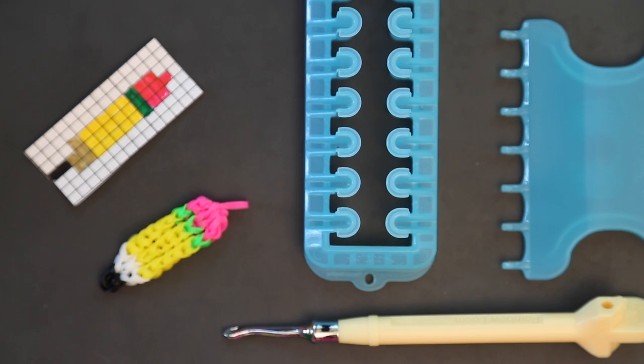To create the pencil, you will need 40 loom bands total. You can use alpha loom bands or regular rainbow loom bands that you've doubled over. The alpha loom bands make it much easier.